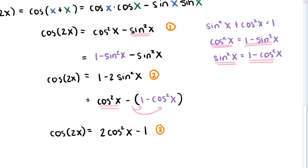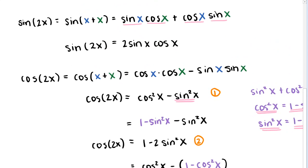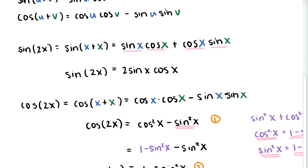All these double angle identities are used quite frequently in later math classes, so they're worth memorizing. But we saw that we could build these without too much difficulty from our angle addition formulas for sine and cosine, and for two of our three cosine identities, we also used the Pythagorean identities. So if you remember the angle addition identities, you can quickly derive these formulas and save yourself some memorization.